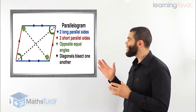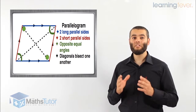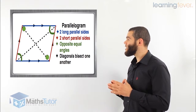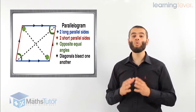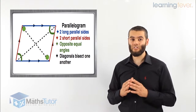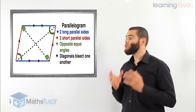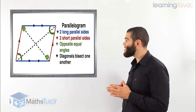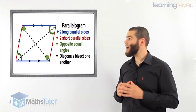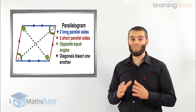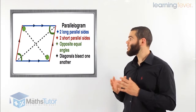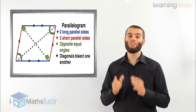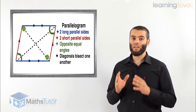Then we look at the parallelogram. The parallelogram has two long parallel sides marked in blue and two short parallel sides marked in red. The opposite angles are equal, and the diagonals bisect one another — the diagonals cut each other in half.